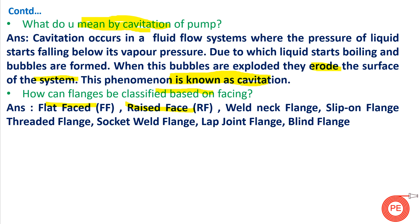How can flanges be classified based on facing? Flanges include flat face, raised face, weld neck flanges, slip-on flanges, threaded flanges, socket weld flanges, lap joint flanges, and blind flanges. Depending upon the application and system requirement, the appropriate flange type is selected.